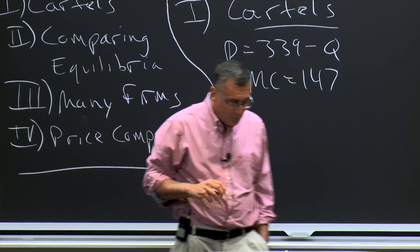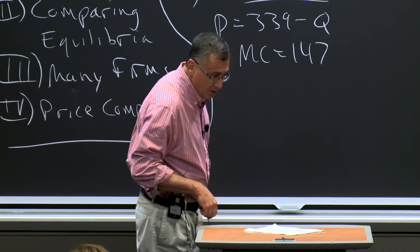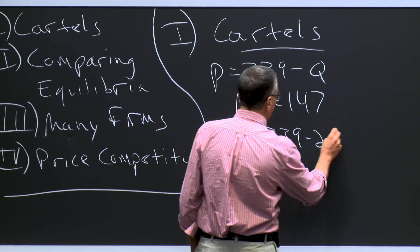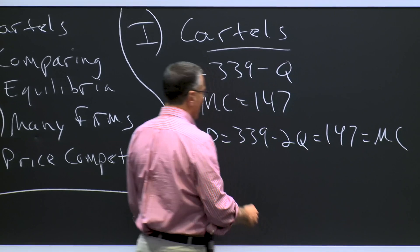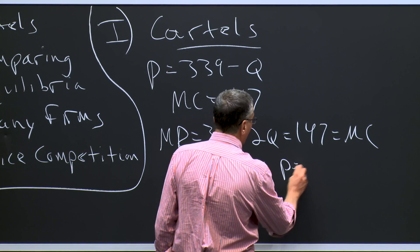Now, we talked about the fact that if American were a monopoly in this market, they would simply solve the monopolist problem. They would set marginal revenue — which is 339 minus 2Q — equal to marginal cost of 147, and they would get that the optimal Q would be 96. Reading back off the demand curve, that would imply an optimal price of $243.